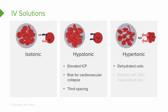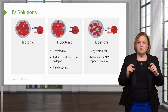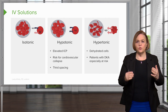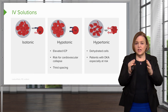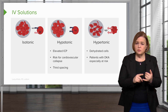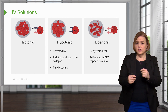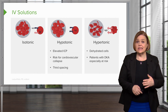Hypertonic solutions are going to lead to dehydrated cells. We're also going to be at risk with patients with DKA, because people who are in diabetic ketoacidosis are already extremely dehydrated. This is a great summary slide. Isotonic causes relatively minimal change. Hypotonic causes fluid to rush into the cell — a big problem for elevated intracranial pressure, blood pressure drops, and edema or third spacing. Hypertonic dehydrates the cell, so it's a problem for people with extreme dehydration like DKA.